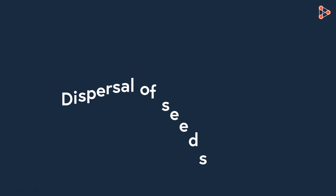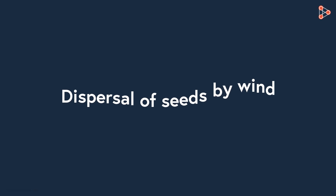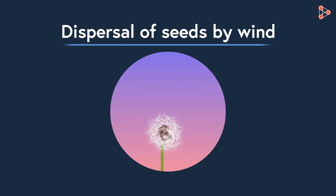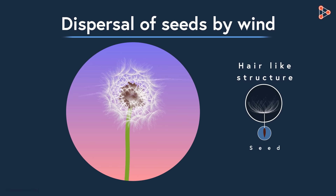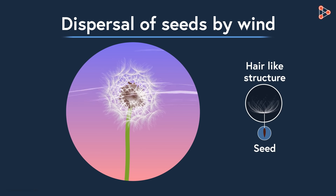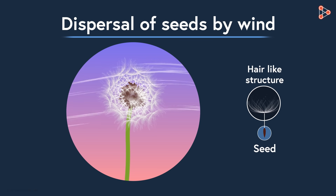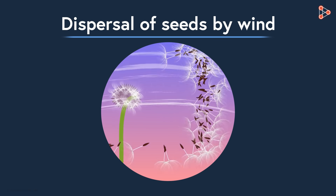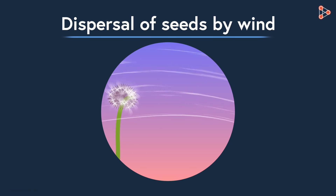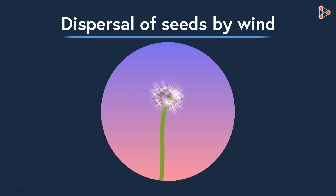Our first agent of dispersal is the wind. Seeds of plants like dandelions have parachute-like or hair-like structures attached that are so light in weight that they easily get carried away by the wind. Such seeds can be carried to distant places.